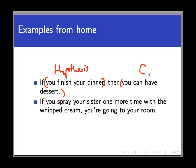The hypothesis of the second statement is you spray your sister one more time with this whipped cream, and the conclusion is you're going to your room. Now these are promises I make. My kids understand, or at least I hope that they do, that whenever the hypothesis happens, the conclusion automatically happens, and this helps them make decisions.